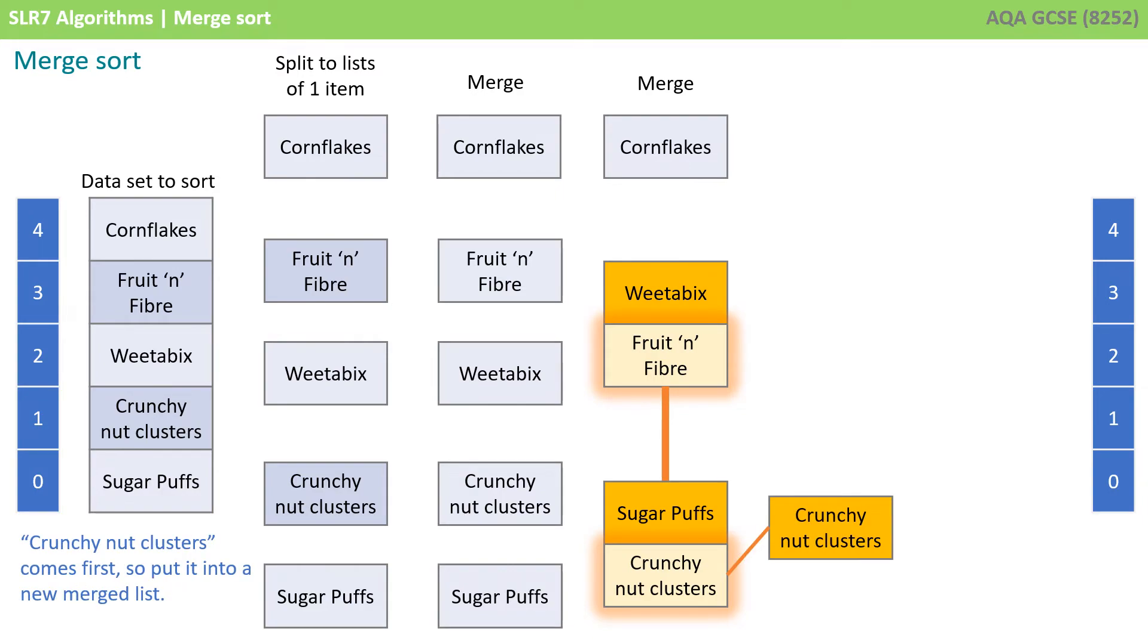Crunchy nut clusters comes first, so we put it into a new merged list currently on its own. We now compare sugar puffs with the first item in the other list, which is still fruit and fibre. Fruit and fibre comes first, so we put it into the new merged list.